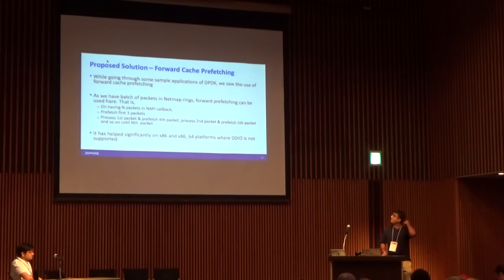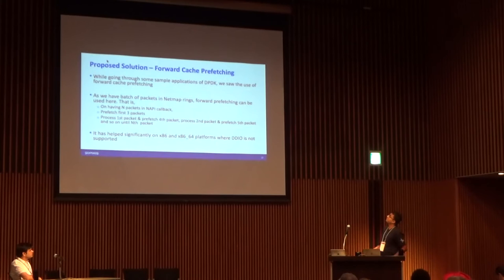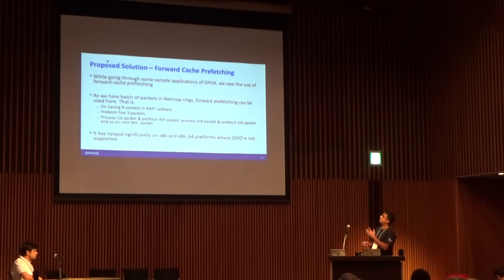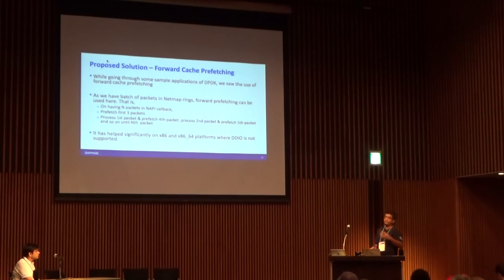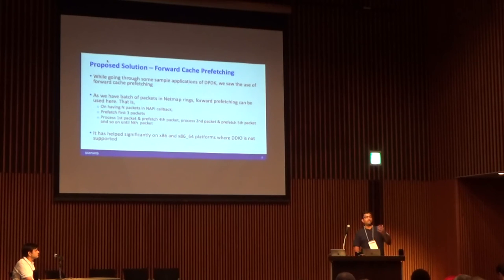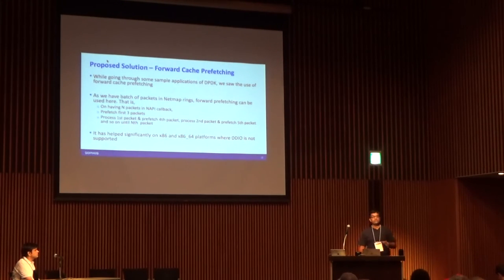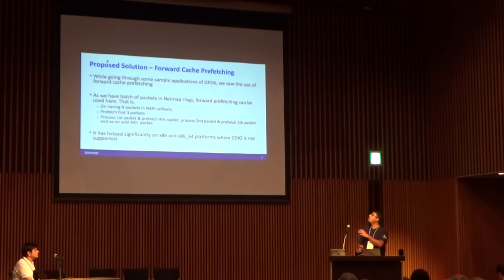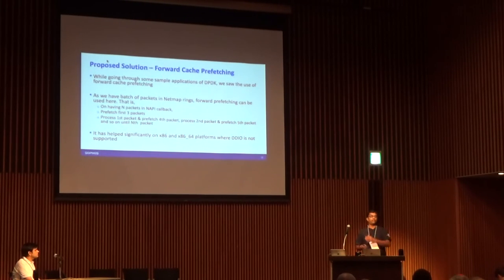Another technique we used is forward cache prefetching. Looking at DPDK sample applications, they use forward prefetching: with N packets in a NAPI callback, we first fetch three packets, and while processing the first packet, we instruct a prefetch for the fourth packet. By the time we process the current packet, the next is already in cache. This helped significantly on x86 and x86-64 boxes and definitely increased performance — except on DDIO-supported boxes, where DDIO itself already sends the packet to L2 cache on receive.